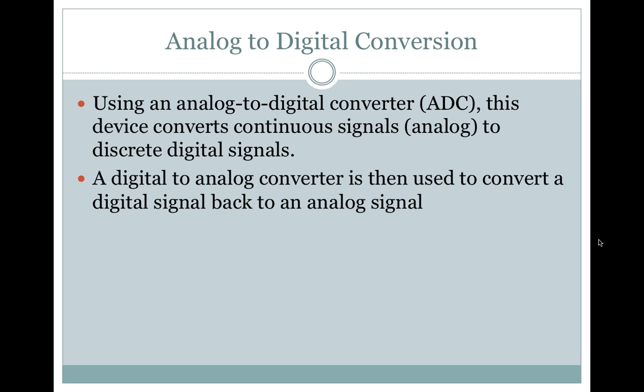Analog to digital conversion. Using an analog to digital converter, ADC, this device converts continuous signals — analog — to discrete digital signals. A digital to analog converter is then used to convert a digital signal back to an analog signal.